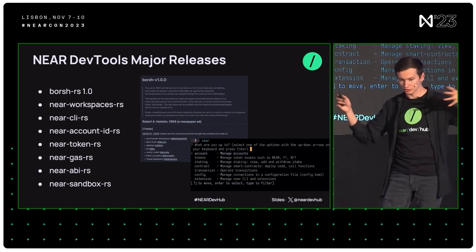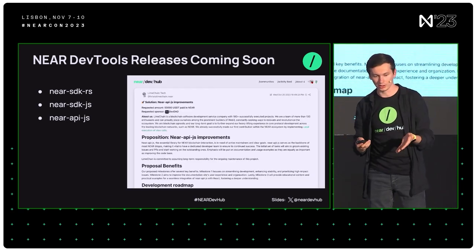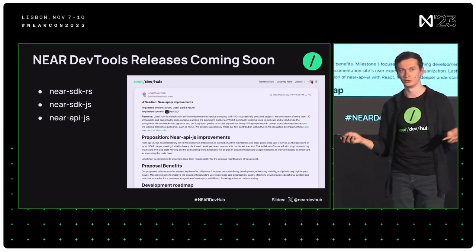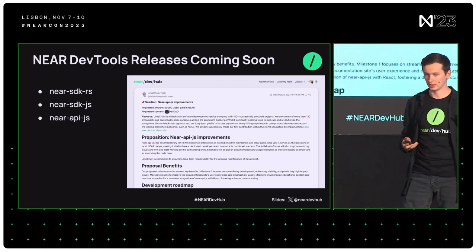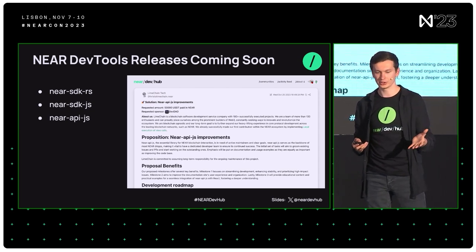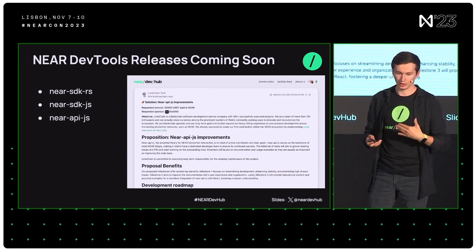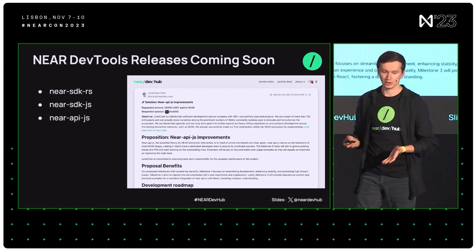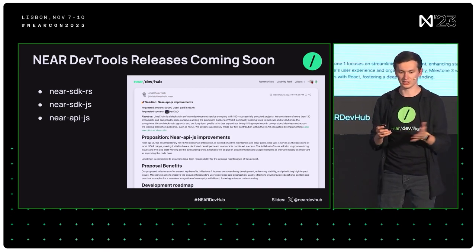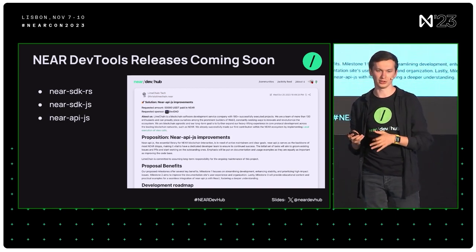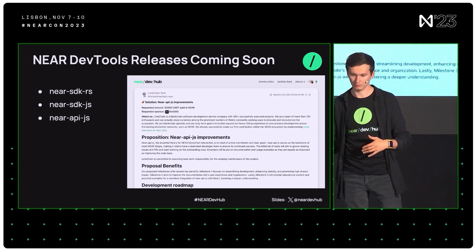These pieces all come together into an even bigger initiative — a full toolset. So near-sdk-rs and near-sdk-js, which are the dev tools for the contract developers on NEAR, are getting a lot more stability and a solid foundation. They are really on track, finally, to have a very solid next release. Near-sdk-rs will reach the 5.0 release, hopefully by the end of this month, with all the changes that we've baked into it.